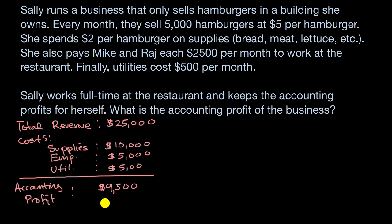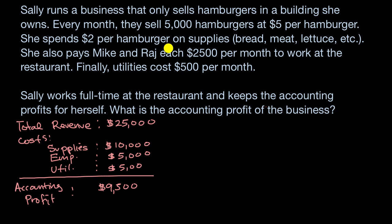Some of you might be correctly thinking that in order to determine whether it's rational for her to continue running this business, we have to know what the implicit costs are. Here we've only looked at the explicit costs. The most important implicit cost is the opportunity cost. To factor that in, we need to know what she could have rented her building out for, and what she could do with her time if she wasn't working at the business full-time.